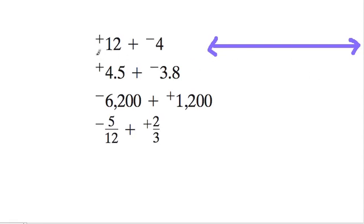So in the first problem, we have positive 12 plus negative 4. And the way I keep it simple is by just starting and writing out the first number I'm given, and nothing else. So I start here, and then I add negative 4.